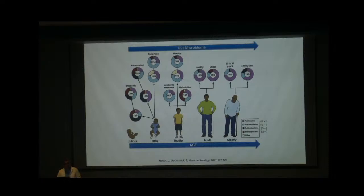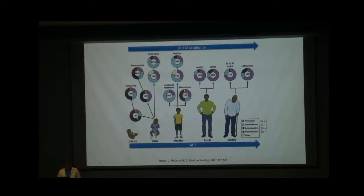A well-established fact is that gut microbiota changes with age, even in healthy conditions. Looking at broad bacterial classifications — Firmicutes, Bacteroidetes, Actinobacteria, Proteobacteria — their proportions, as shown in these donut plots, vary from an unborn child through breastfed infancy, where Actinobacteria essentially vanishes within three to four months. This is affected by antibiotics, malnutrition, diet, and lifestyle in adulthood, and it changes again during the elderly stages.